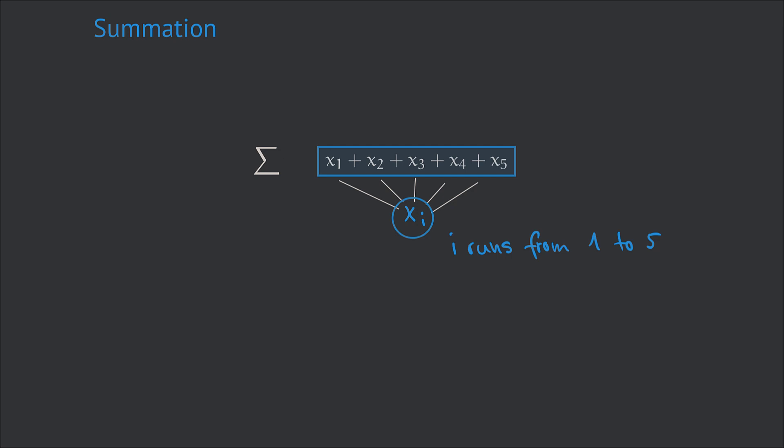Immediately after the capital sigma we write the structure xi in this case, and below and above the sigma we write down from where to where the index i should run. The starting value of the index i is written below sigma whereas the ending value of the index i is written above sigma. So now our summation notation is complete for this example and we can put an equal sign.